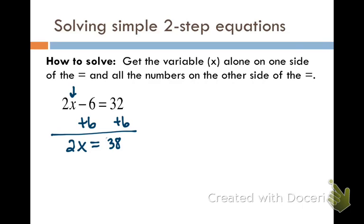Next we're going to get rid of the 2. The 2 is attached by multiplication, so we're going to divide both sides by 2. And there we go, we get x equals 19.